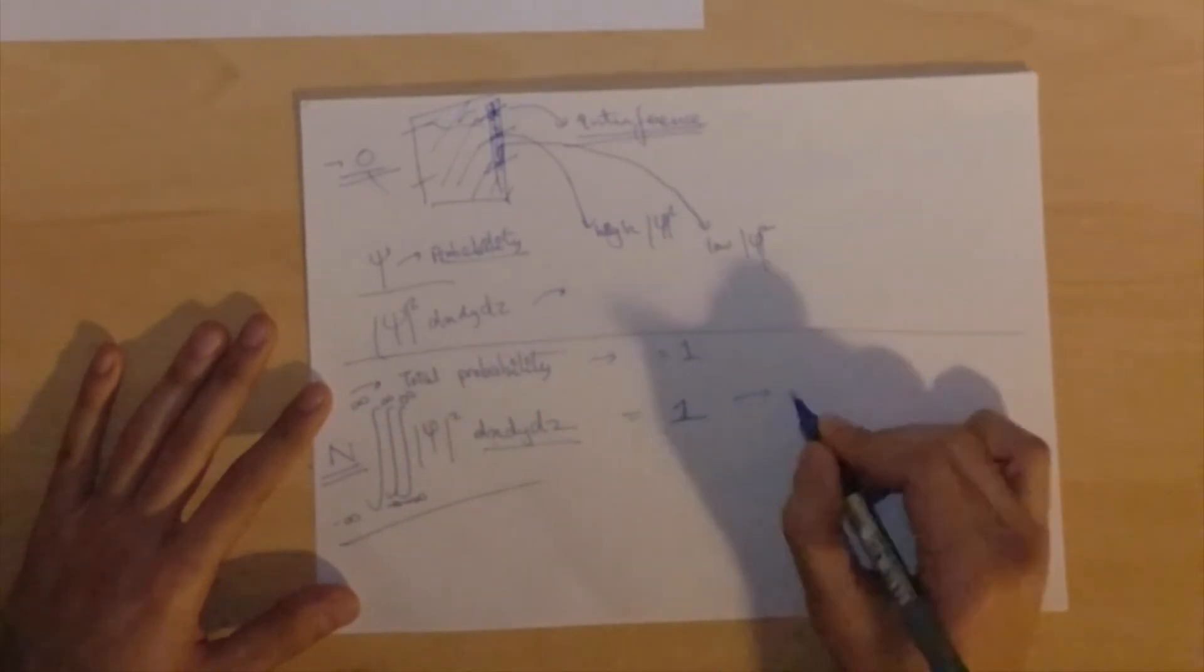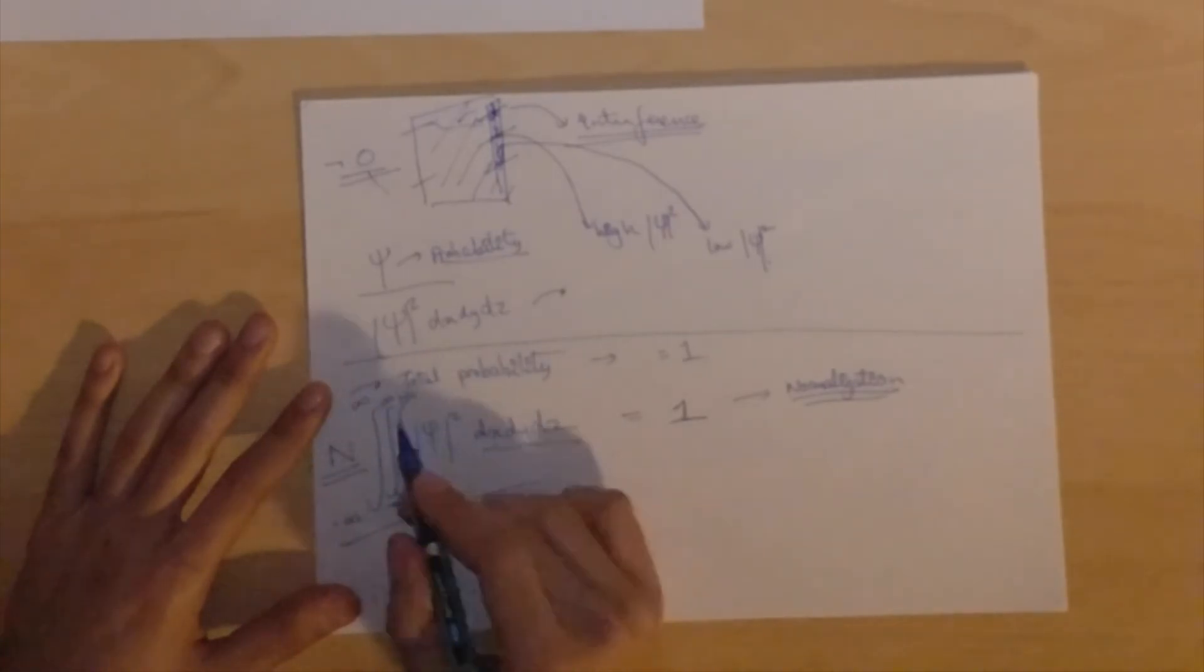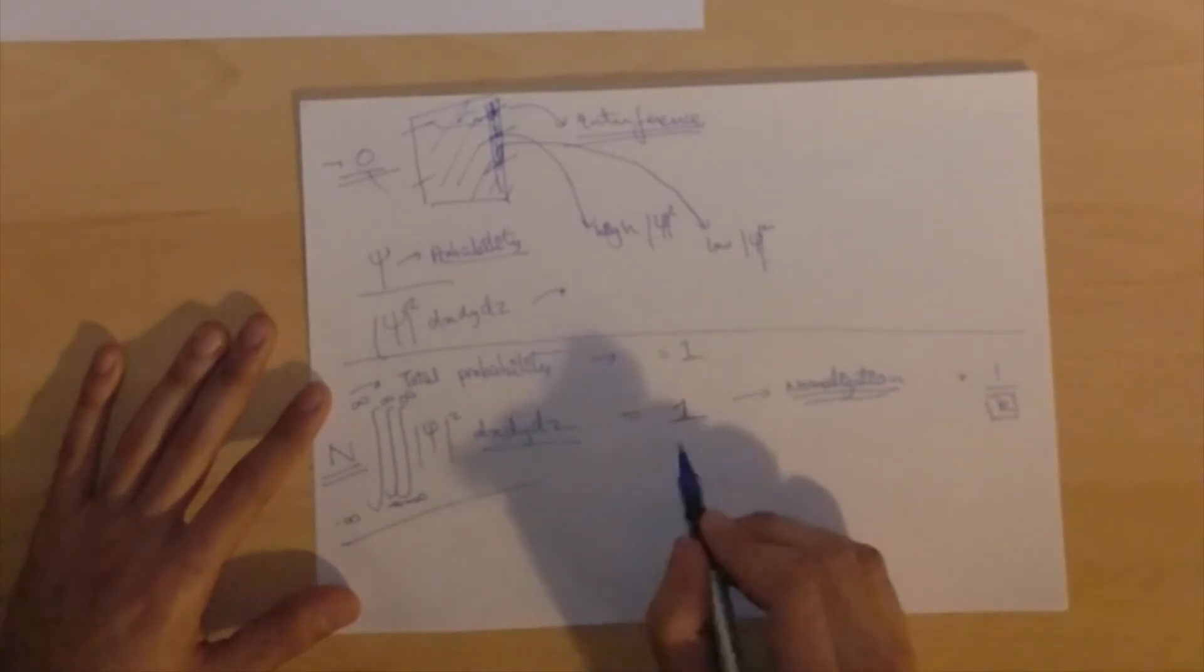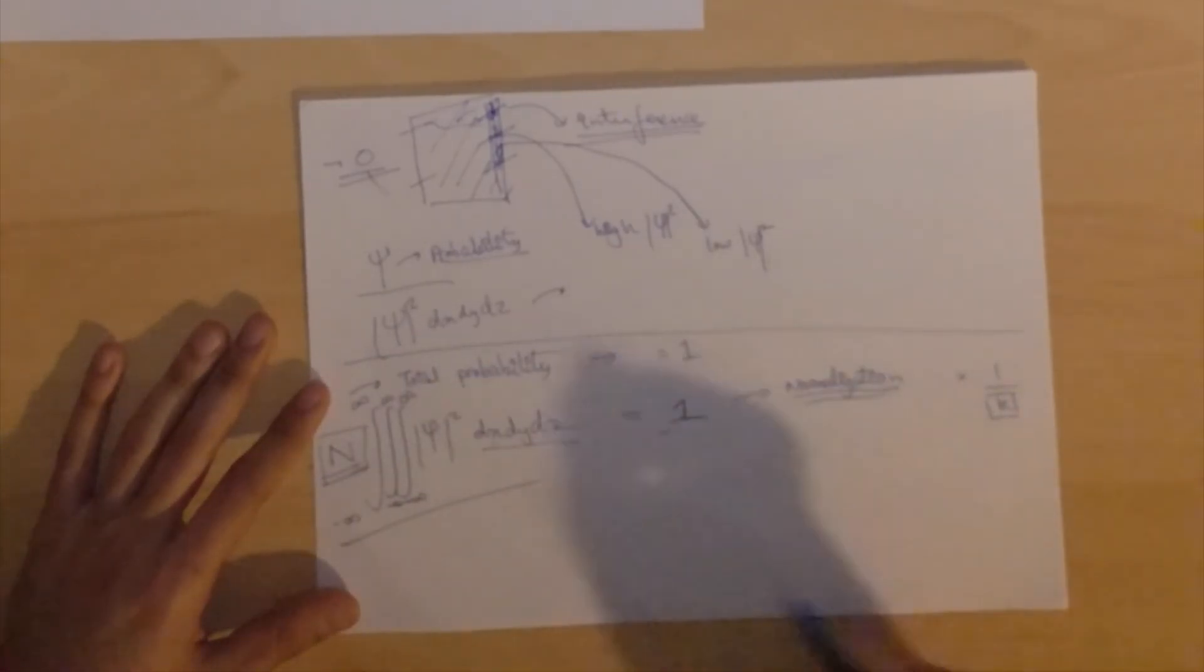Now this is known as normalization, it's fairly straightforward. We just multiply it by something so that we get equal to 1. So if psi squared times dx dy dz, if this integral is too big, we multiply it by something like 1 over k, where k is some integer, and the product of this should be equal to 1. And this also helps us find the value of n. So if you take n to the other side, if you know this value, you will find n.